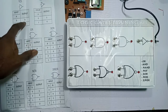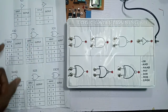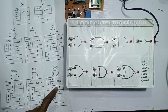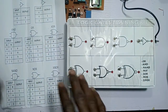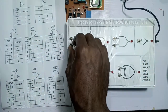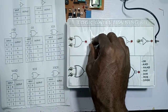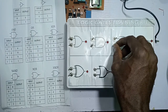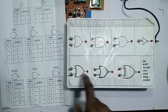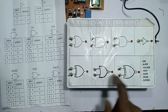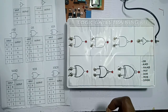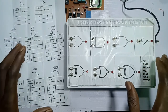We have gates from NOT gates to AND gates, OR, XOR, NAND, NOR, and XNOR. Looking at the device, we have all these logic gates represented — OR gates, AND gates, NAND gates, NOT gates, XOR, NOR, and XNOR — as you can see. I want to implement each logic gate using this device.